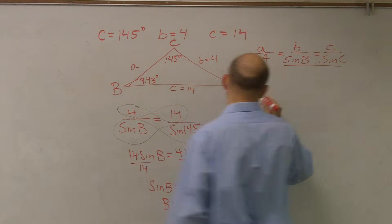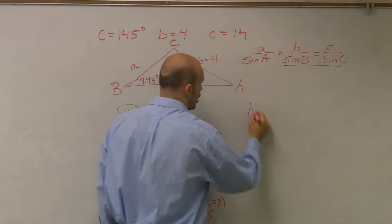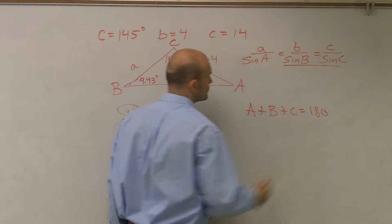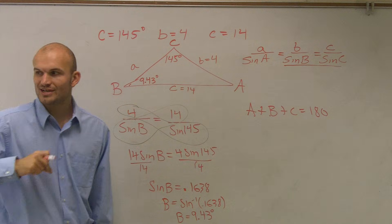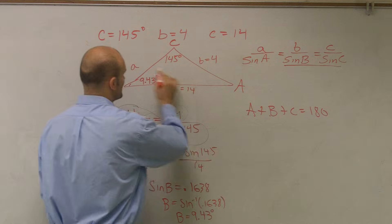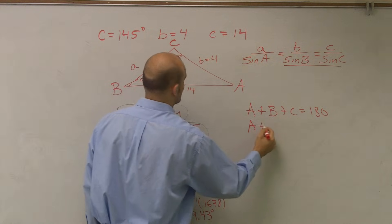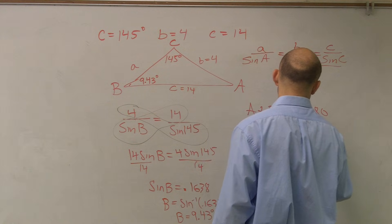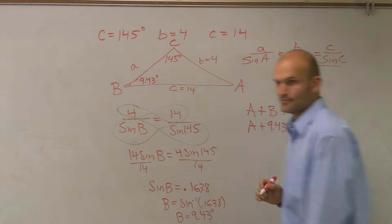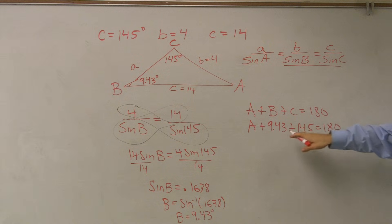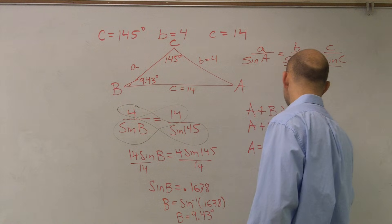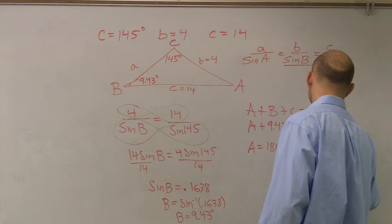So now you guys figure this out. So now the next thing you guys need to remember is all the angles in a triangle equals 180, right? Good old geometry. So we know A, we don't know what A is, plus B is 9.43, plus C is 145 equals 180, right? So all we do is we subtract these from 180, so I have A equals 180 minus 9.43 minus 145.